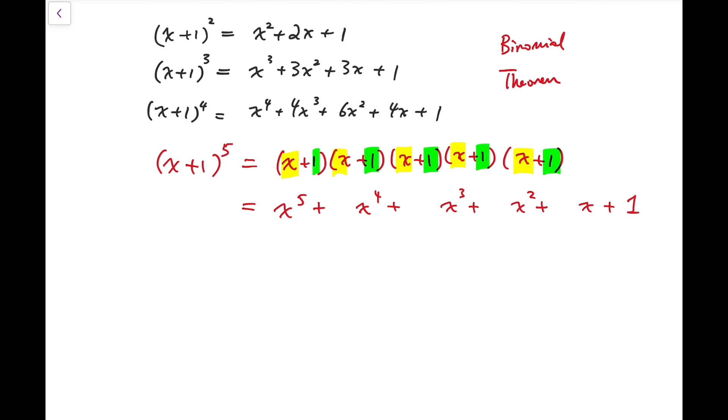For x to the power 5, we need to choose x from all 5 copies of x plus 1, underlined in black. So that means we need to choose all 5 objects among 5, which means there are 5 choose 5 number of ways to get x to the power 5.